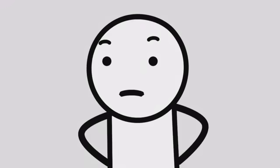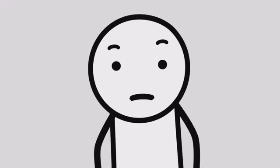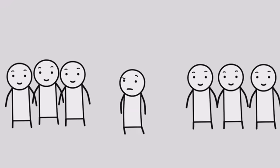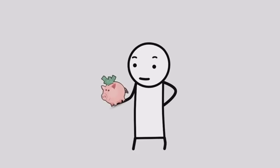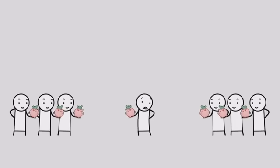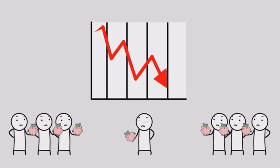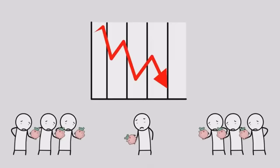The paradox of thrift. This occurs when actions that make sense for an individual become harmful when everyone does them. Saving money is wise for one person. But if everyone saves at once, spending drops, businesses earn less, and the economy can shrink.